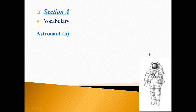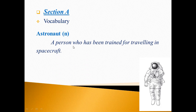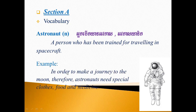Here, vocabulary. Astronaut — what is it? Everybody look at the picture here. You might know this one, but sometimes we can see the picture, we understand, but it's hard to say in Khmer. A person who has been trained for traveling in spacecraft. Example: in order to make a journey to the moon, astronauts need special clothes, food, and medicine.